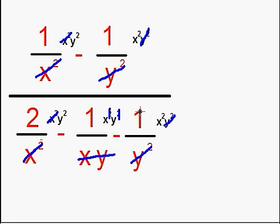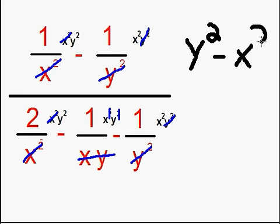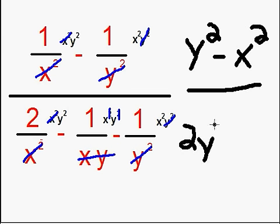Alright, simplification is done, so I'll just go through and multiply what I have left. I have y squared minus x squared on the top, and here on the bottom we have 2y squared minus xy minus x squared.